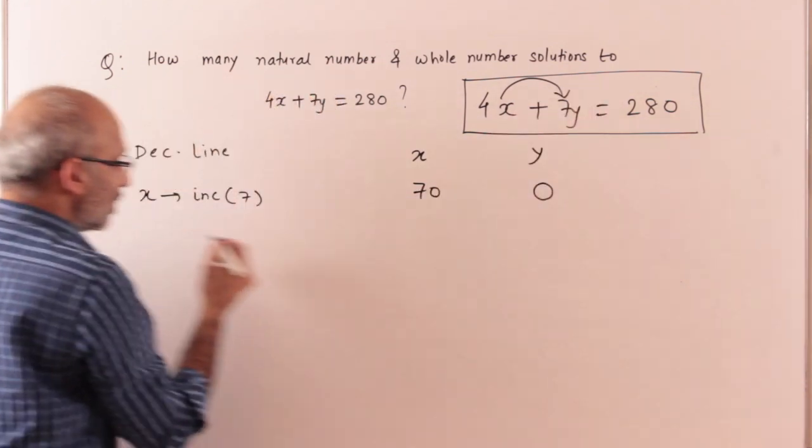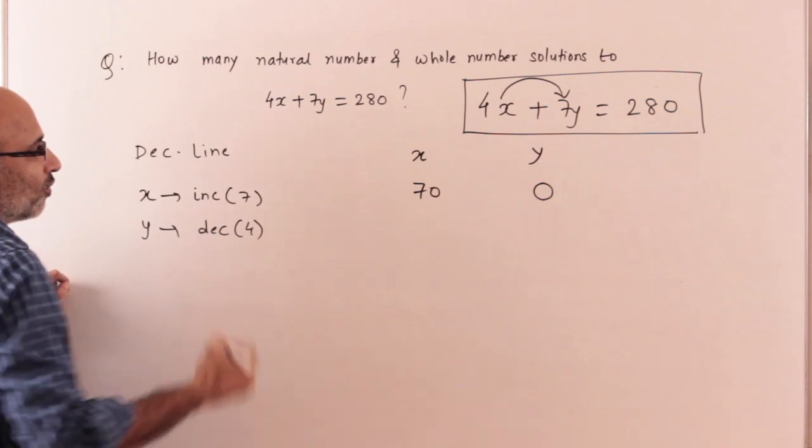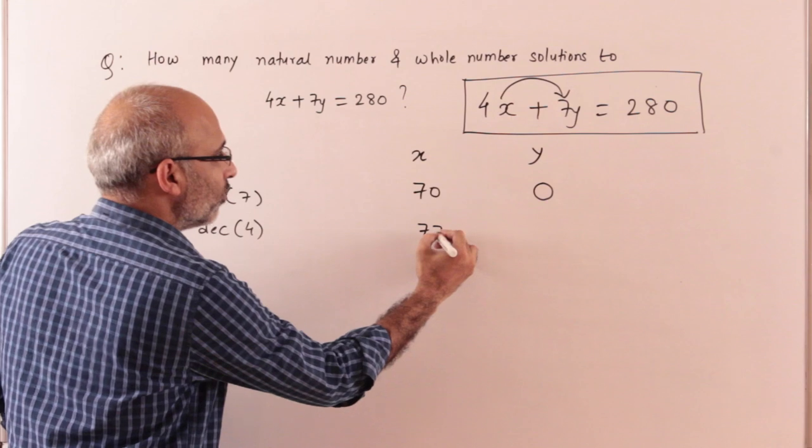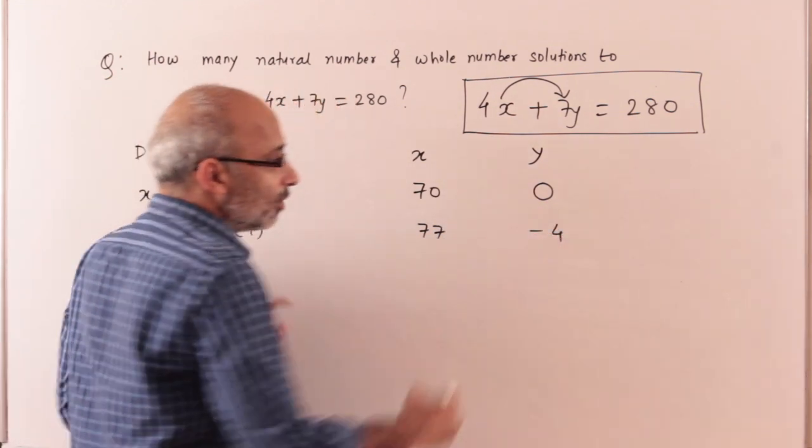If I increase x by 7, then y decreases by 4. So if x increases by 7, y decreases by 4.